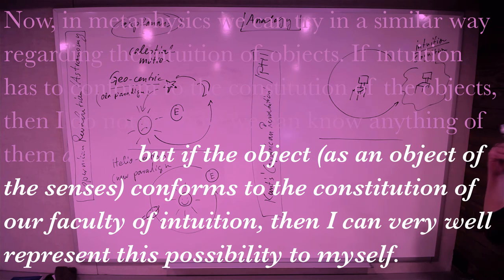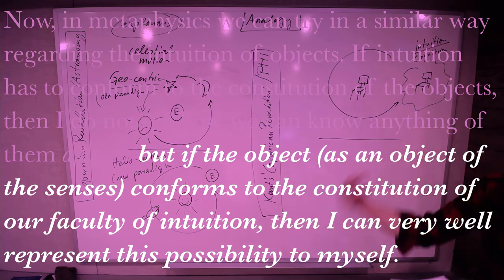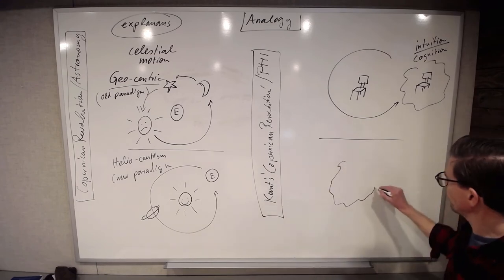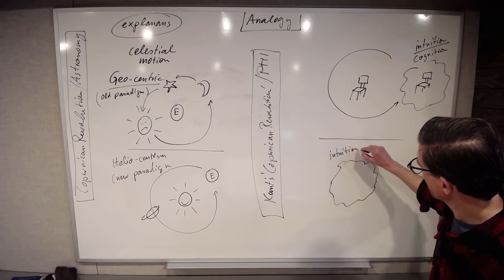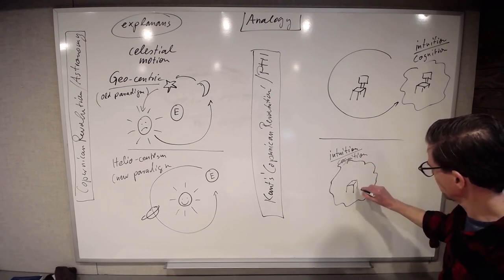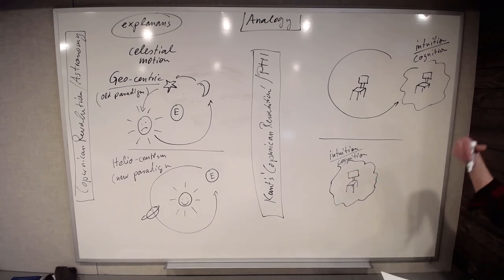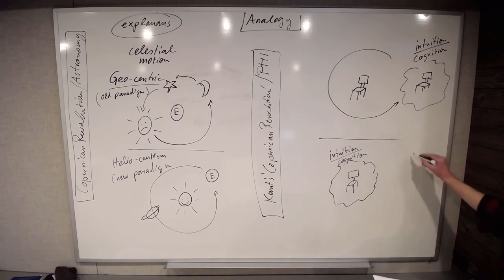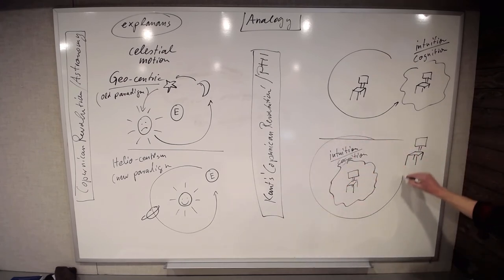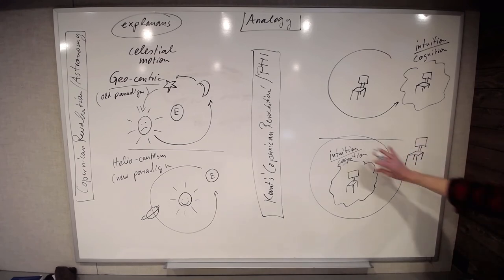If now the object, as an object of the senses, conforms to the constitution of our faculty of intuition, then I can very well represent this possibility to myself. Kant is saying if my intuition, and more generally my cognition, if the object conforms to my cognition, to my intuition and cognition, the constitution of my intuition and cognition, then I can understand and then I can make progress in metaphysics. So now we have, if you will, by analogy, the objects revolving around our cognition.